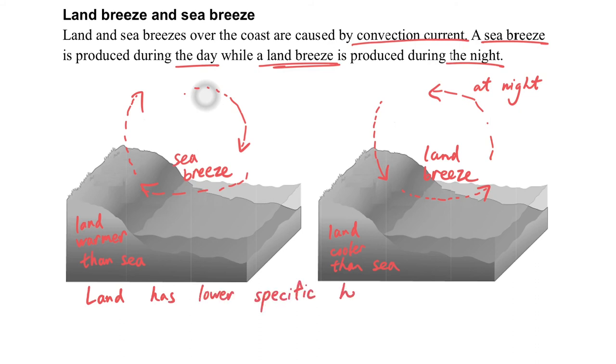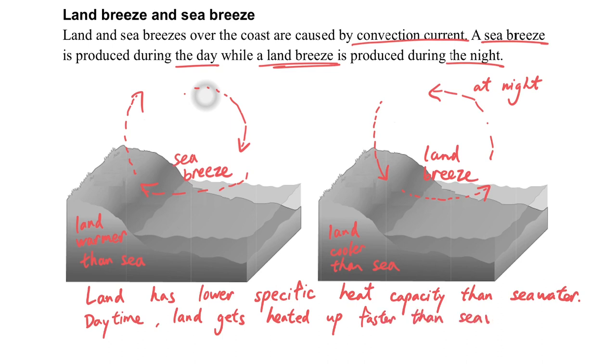The land has a lower specific heat capacity than the sea. It means that if the land absorbs the same amount of energy with the sea water at the same time, it will have a larger change in temperature. So during the daytime, the land will get heated up faster than the sea water.